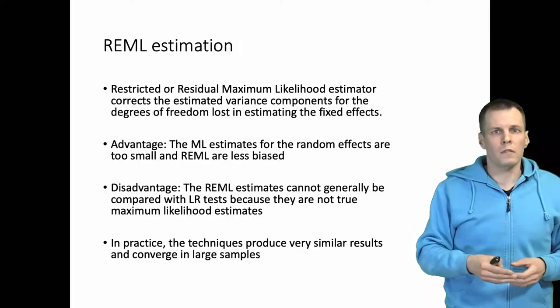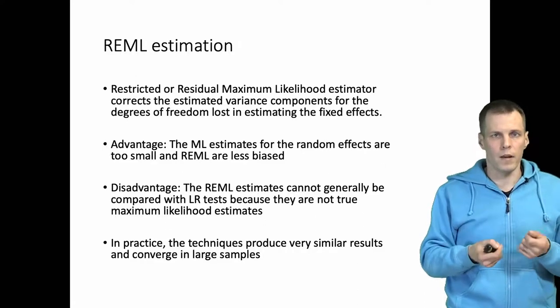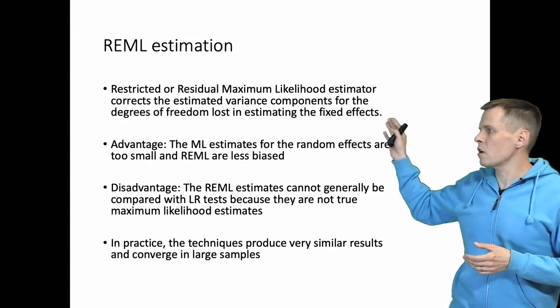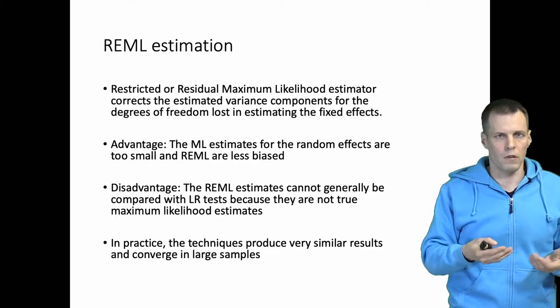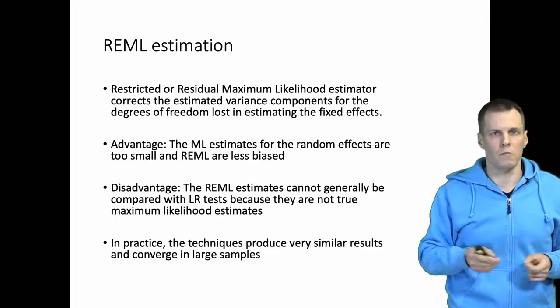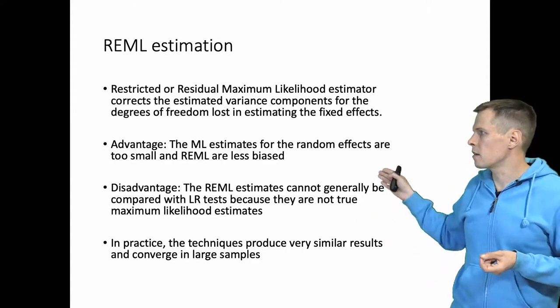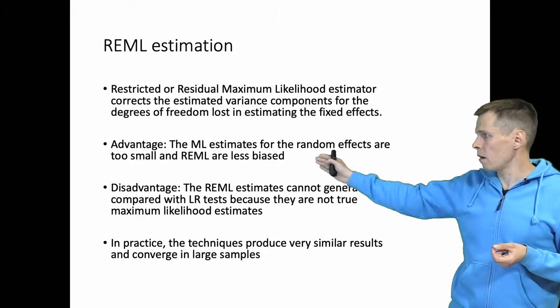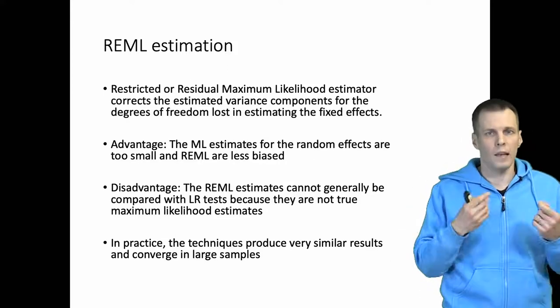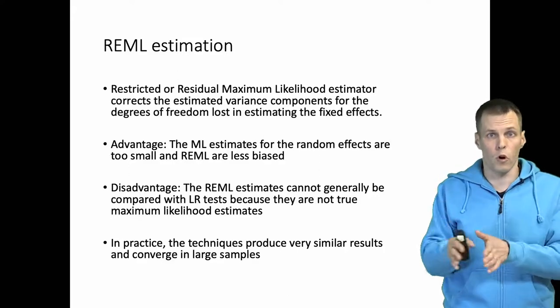I will not go into the technicalities of REML estimation. It's basically applying a slightly different variation of the normal likelihood formula for this problem. But what you need to understand is that the restricted maximum likelihood estimation corrects for the degrees of freedom lost in estimating the mean before estimating the variance components. This has an advantage that REML estimates are less biased. They are not unbiased in small samples, but they're typically less biased than the maximum likelihood estimates that are typically too small in small sample sizes.